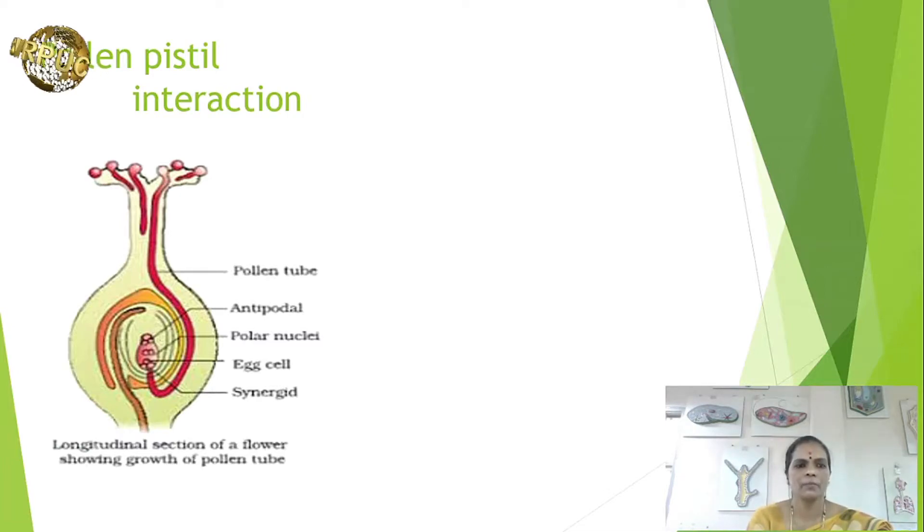Because pollination does not guarantee the transfer of the right type of pollen grain. If it is the right type, the pistil accepts the pollen grain and promotes post-pollination events that lead to fertilization.